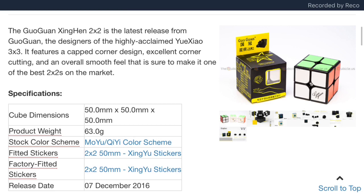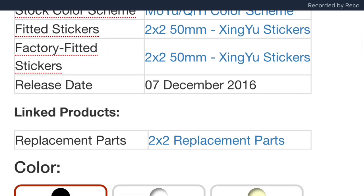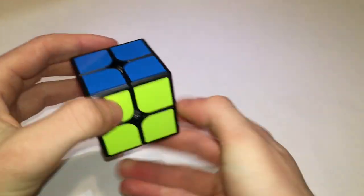You can buy this guy for $12 at TheCubicle.us, and it comes in the standard 2x2 sizes with the standard black, white, and primary plastic.